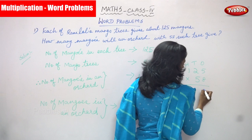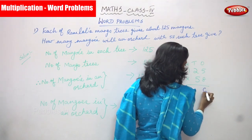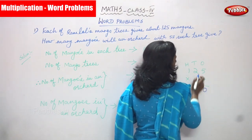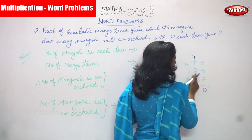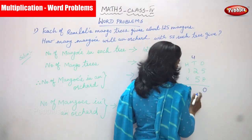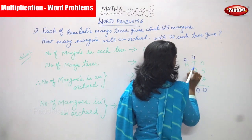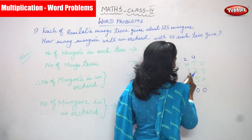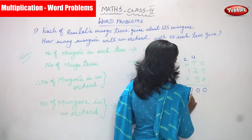8 fives are 40 — write 0, carry 4 to the tens place. 8 twos are 16, plus 4 is 20 — write 0, carry 2 to the hundreds place. 8 ones are 8, plus 2 is 10. So 125 times 8 gives us 1000.